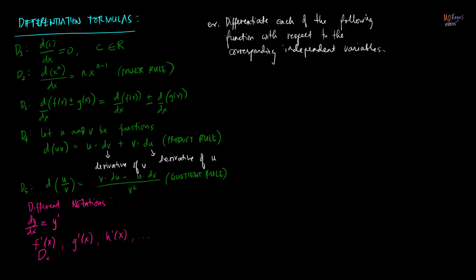In the following examples we need to differentiate the given functions with respect to their corresponding independent variables, which may be letters other than x. Applying formula D1: if f of x equals 5, then differentiating with respect to x gives f prime of x equals zero, since the derivative of any constant is zero.